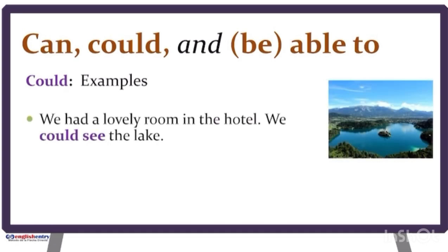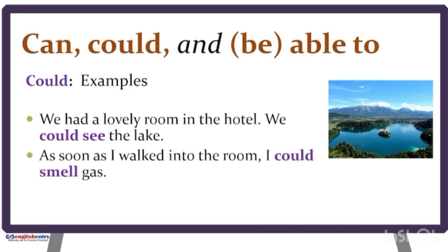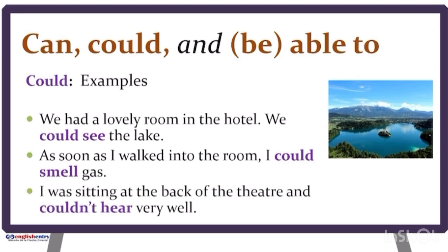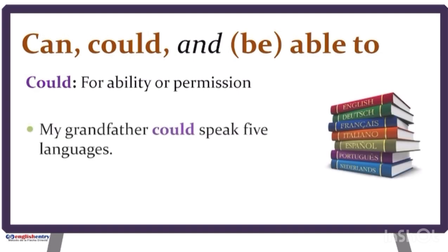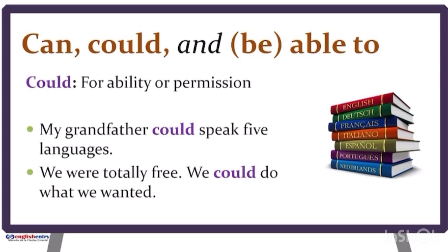Let's see examples. We had a lovely room in the hotel — we could see the lake. At the back of the theater we couldn't hear very well. We can also use could to say that somebody had the general ability or permission to do something. My grandfather could speak five languages. We were totally free — we could do what we wanted, meaning we were allowed to do what we wanted.